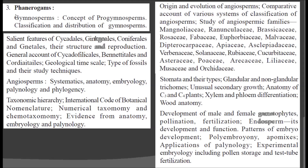This is the third unit of paper 1 in your Botany Optional syllabus. Here we have chemotaxonomy in the taxonomy hierarchy, and we should study this chemotaxonomy in very detail.